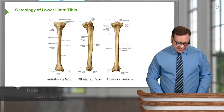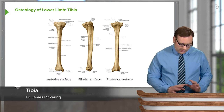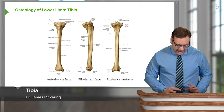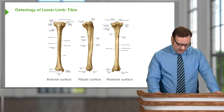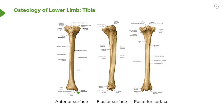Now let's have a look at the tibia. Here we can see we have anterior and posterior surfaces of the tibia. We can see we've got the medial malleolus here, and on the posterior surface we can still see the medial malleolus forming the ankle joint. We also have a fibular surface — this is the surface you would see if you were standing where the fibula was. We'll talk first of all about the tibial plateau, the proximal part of the tibia.